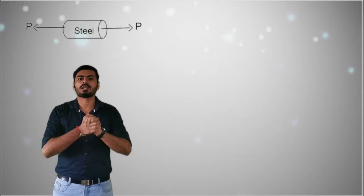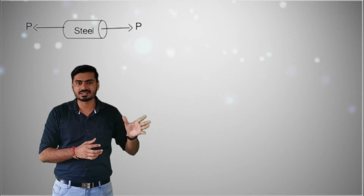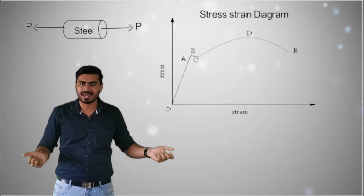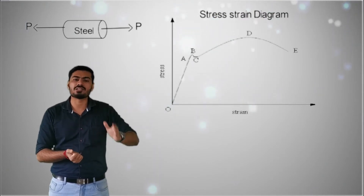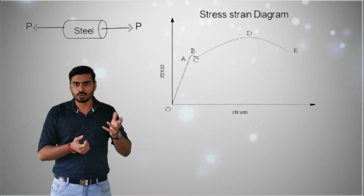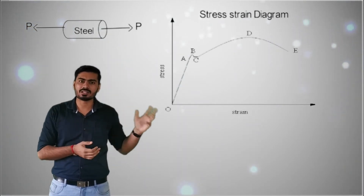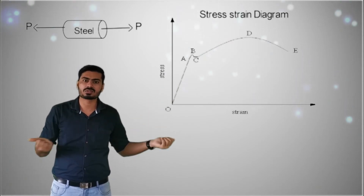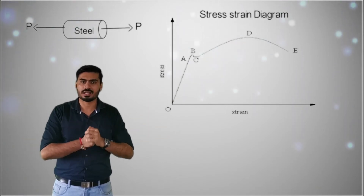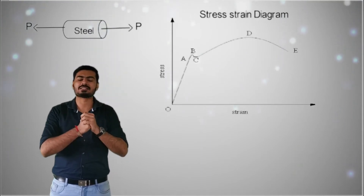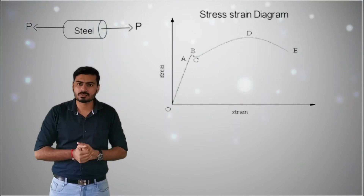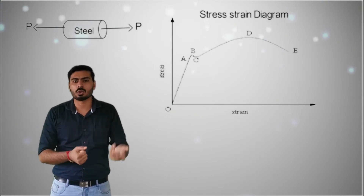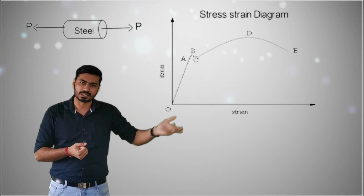The steel specimen is loaded in the UTM — the Universal Testing Machine — in which tensile forces will be applied and the value of these tensile forces will be gradually increased. In the diagram, the steel material is shown with tensile forces applied in opposite directions, with magnitude P. As soon as you increase the value of force P, the material will try to elongate and due to this elongation the strain value will also increase.